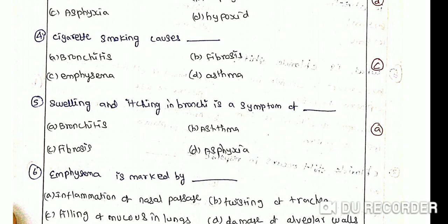This is a disorder of bronchi in which there is regular swelling and itching of bronchi and is characterized by regular coughing. It may be both acute disorder and chronic disorder.